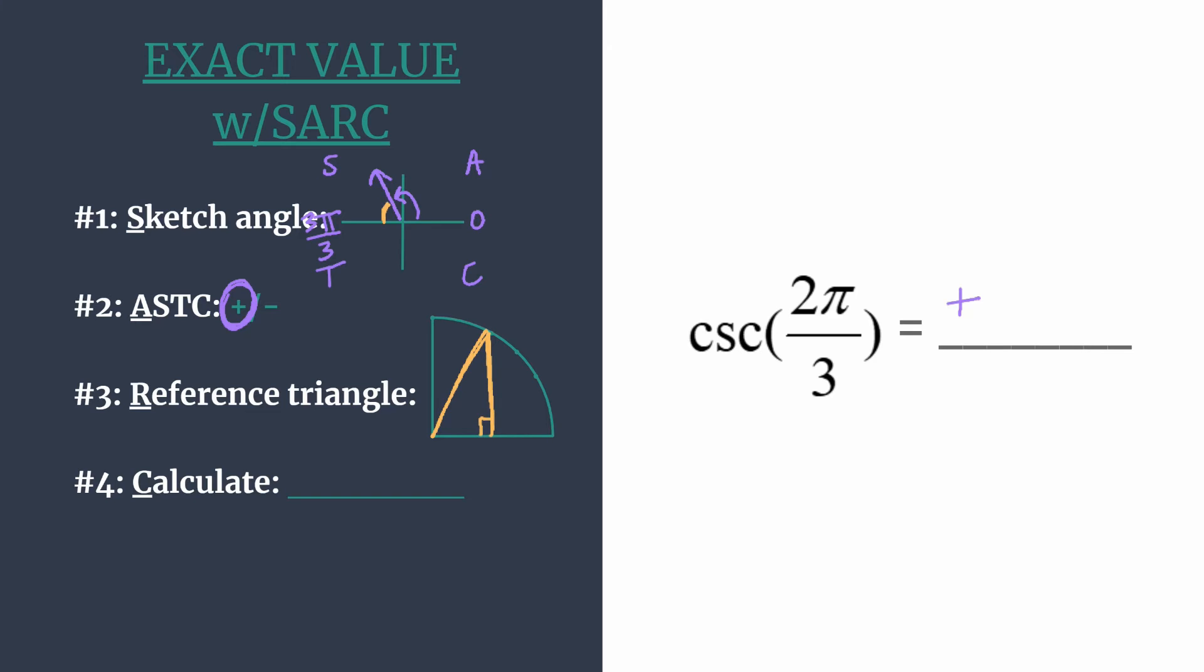That's the 60-30-90 special right triangle. And we know that the ordered pair that goes with that will be 1 half because the horizontal leg is the shorter leg right here. And then the longer leg is our vertical leg. So root 3 over 2.